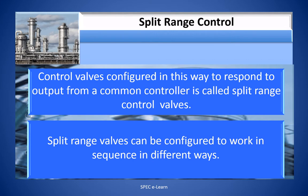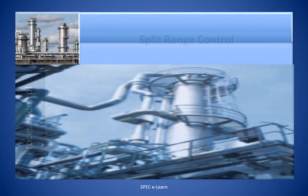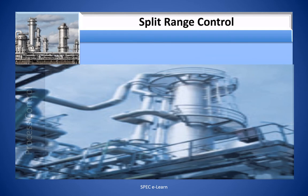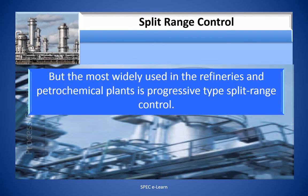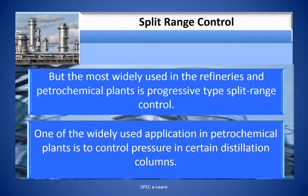Split Range Valves can be configured to work in sequence in different ways, but the most widely used in refineries and petrochemical plants is Progressive Type Split Range Control. One of the widely used applications is to control pressure in certain distillation columns.